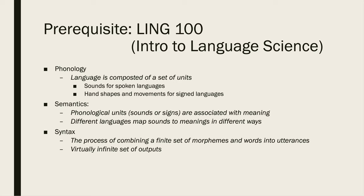The prerequisite for this class is Ling 100, Introduction to Language Science. You must have taken Ling 100 in order to register for this class. If you have not taken Ling 100, it is possible to continue in this class if you have sufficient background in linguistics — to do so, you will have to apply to me directly and get instructor consent during the first week of class. The reason for this prerequisite is that over the course of this semester, we will be covering a number of concepts that I will assume you have been previously exposed to.